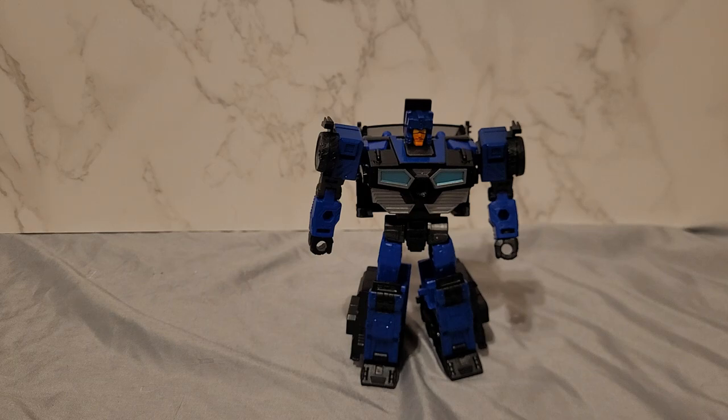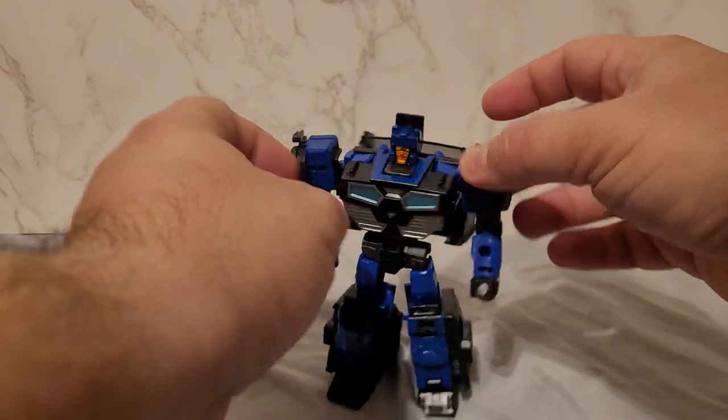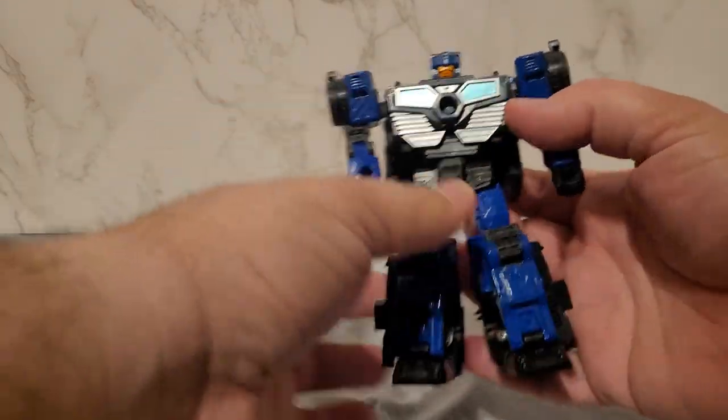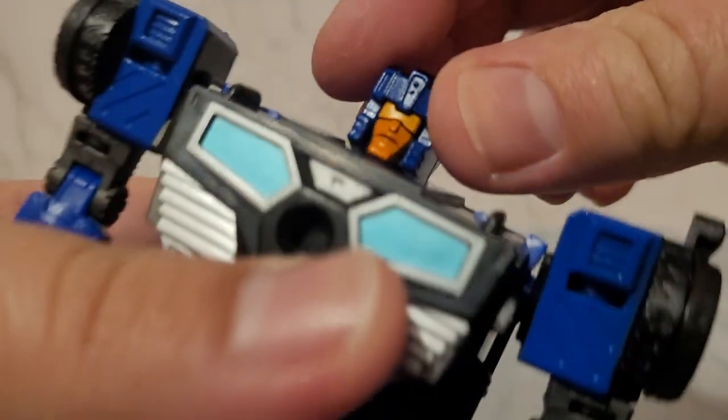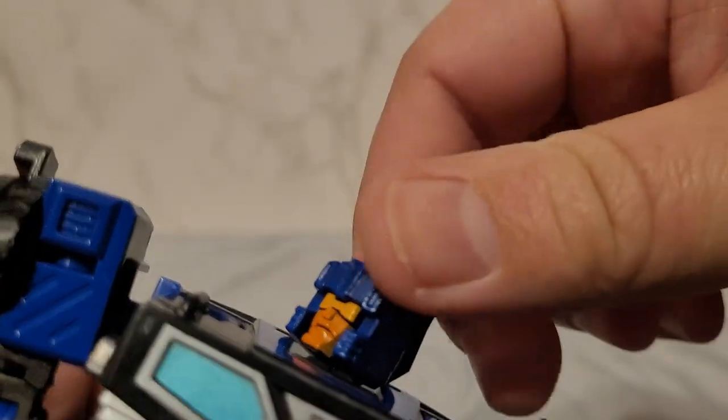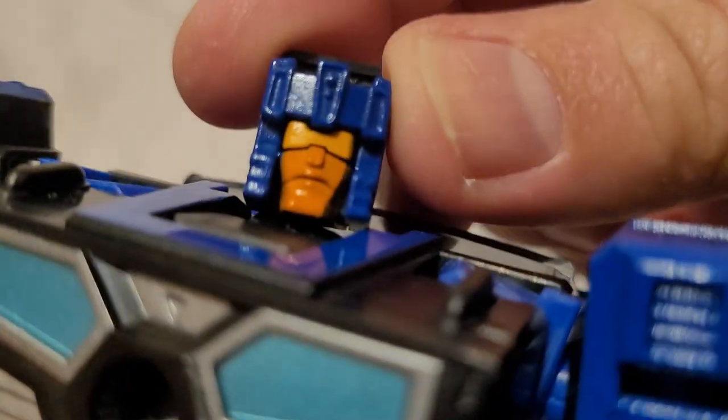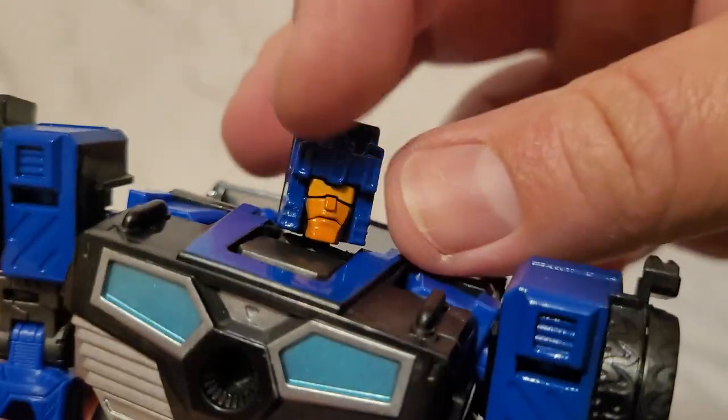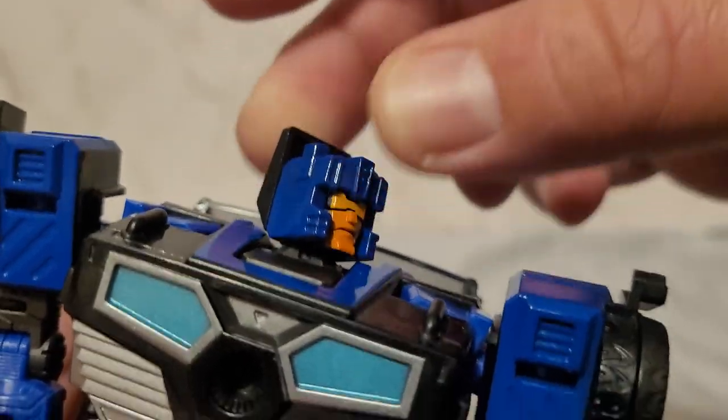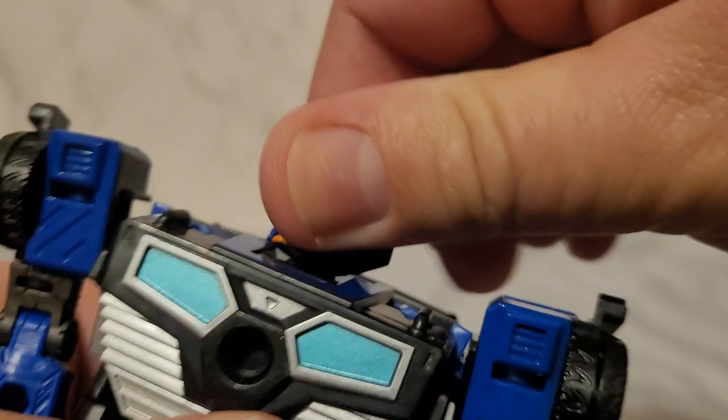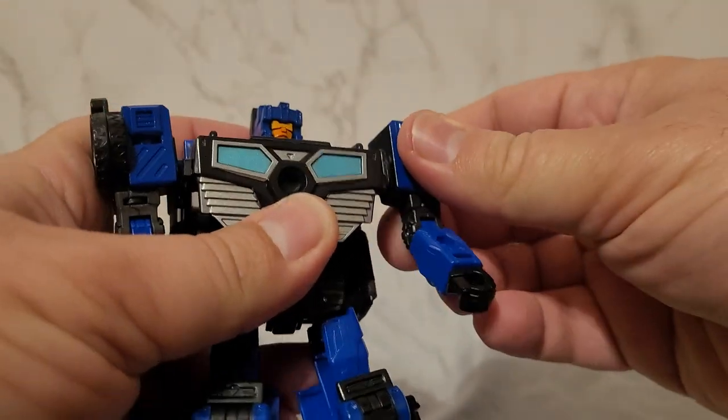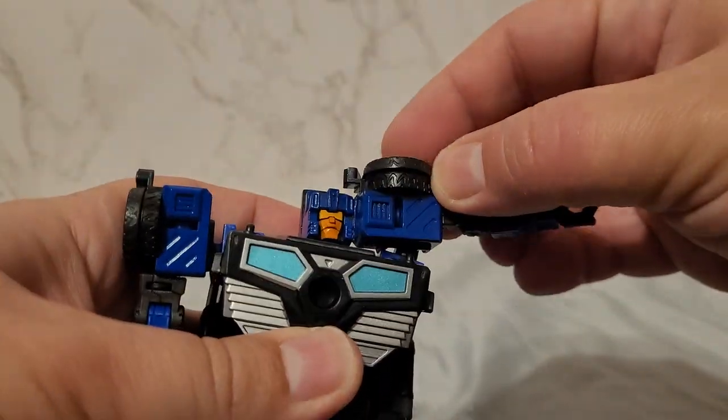It's a cute little reference which is nice. Let's get on with articulation. The head sculpt has a nice orange face, maybe a little too orange for my liking. I would have liked his visor to be a different color but it's pretty cool. Head is on a ball joint.